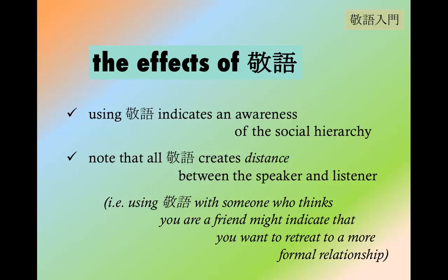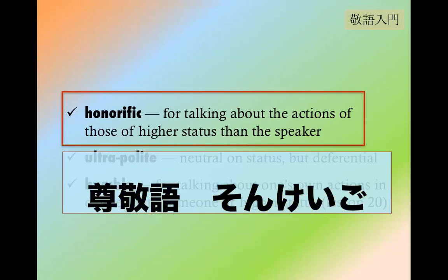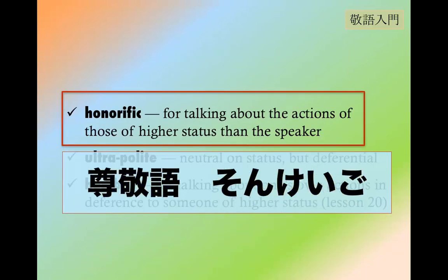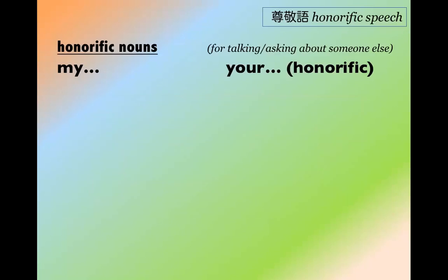In this video, I'm going to be talking more about Sonkeigo, which is the honorific form of Keigo. In Sonkeigo, one of the features is that it's not just about talking about the actions of someone of higher status or someone you want to be deferential to.